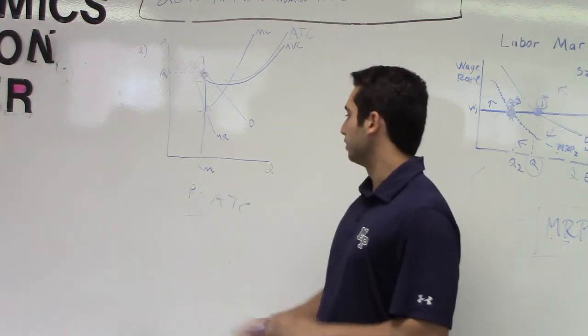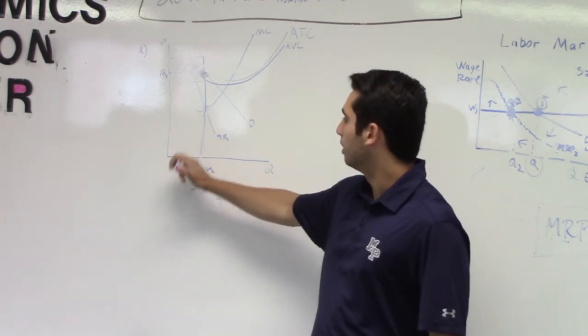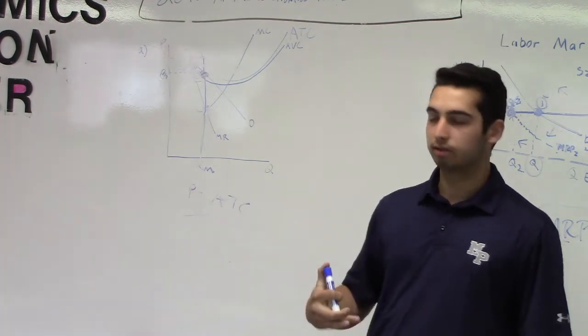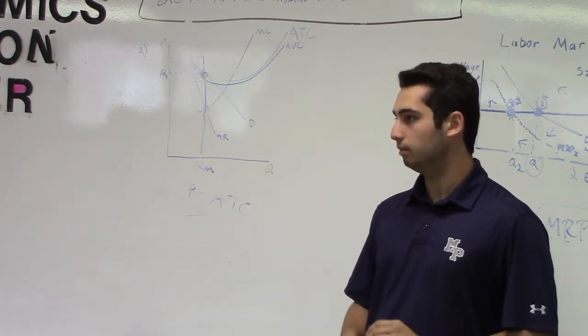Because before quantity star, the MR is actually greater than MC, so they would be making more money selling that extra ticket.